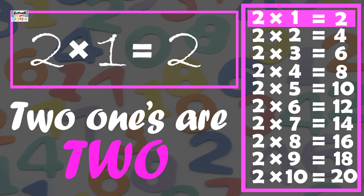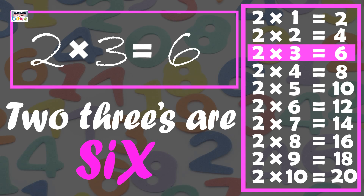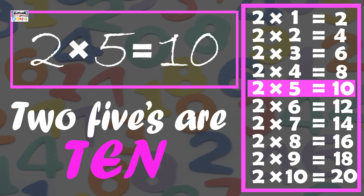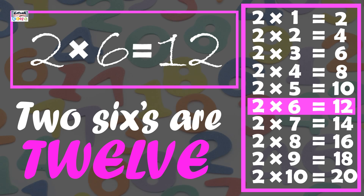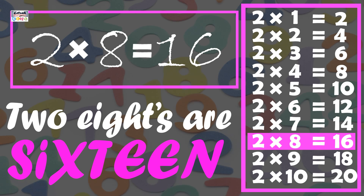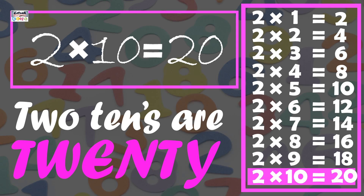2 times 1 is 2, 2 times 2 is 4, 2 times 3 is 6, 2 times 4 is 8, 2 times 5 is 10, 2 times 6 is 12, 2 times 7 is 14, 2 times 8 is 16, 2 times 9 is 18, 2 times 10 is 20.